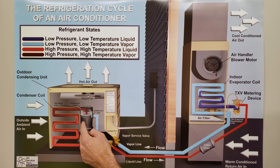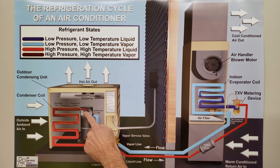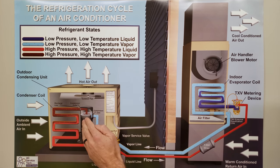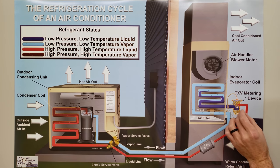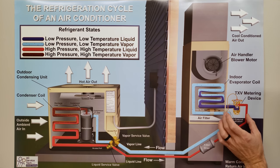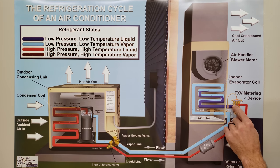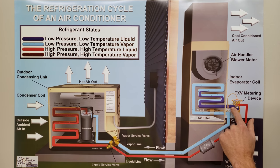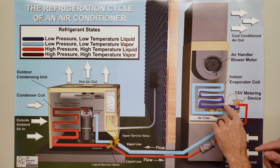You have a couple of devices accomplishing this task. One is the compressor — a pressure-increasing device — which takes low-pressure, low-temperature refrigerant in and outputs high-pressure, high-temperature vapor. Then you have the metering device, a restrictor or pressure-lowering device, where high-pressure liquid enters and low-pressure liquid exits.